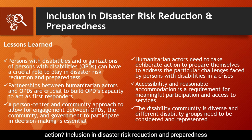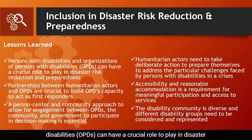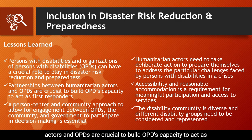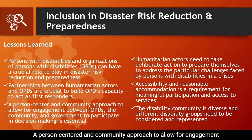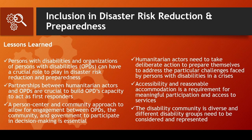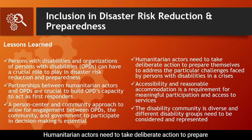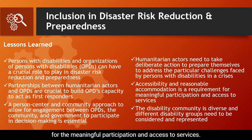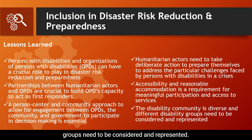What are some examples of disability-inclusive humanitarian action? Inclusion in Disaster Risk Reduction and Preparedness — Lessons Learned. Persons with disabilities and organizations of persons with disabilities (OPDs) can have a crucial role to play in disaster risk reduction and preparedness. Partnerships between humanitarian actors and OPDs are crucial to build OPDs' capacity to act as first responders. A person-centered and community approach to allow engagement between OPDs, the community, and government to participate in decision-making is essential. Humanitarian actors need to take deliberate action to address the particular challenges faced by persons with disabilities in crisis. Accessibility and reasonable accommodation is a requirement for meaningful participation and access to services. The disability community is diverse and different disability groups need to be considered and represented.